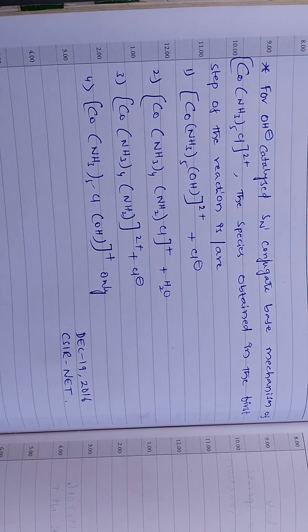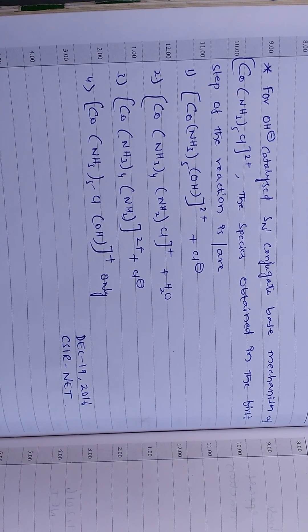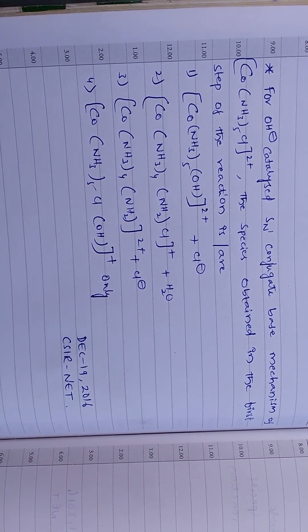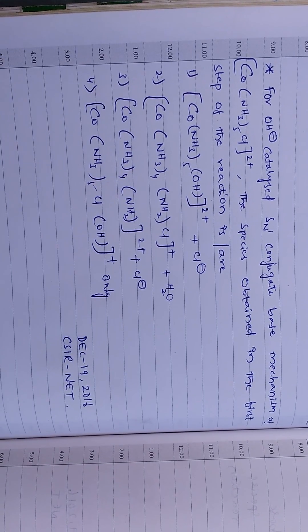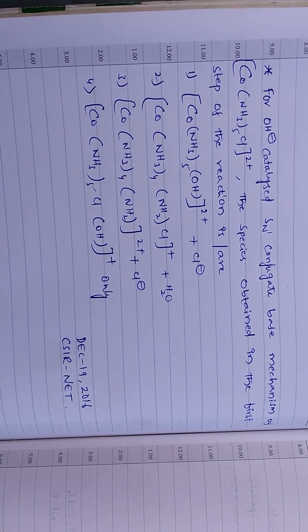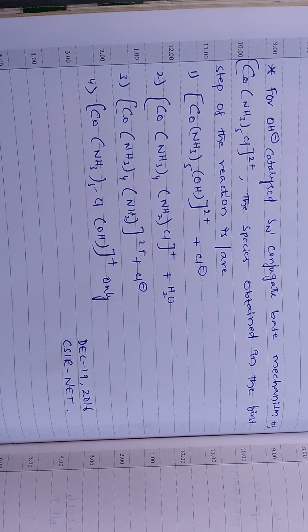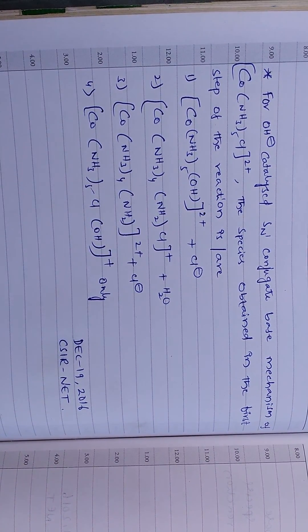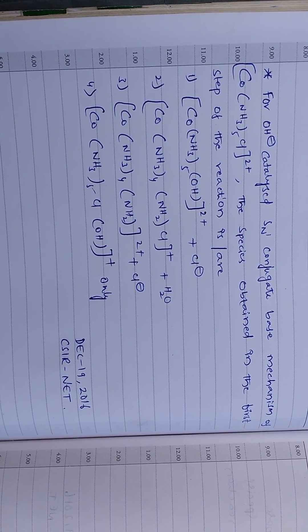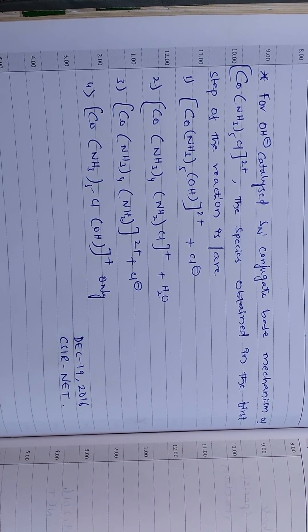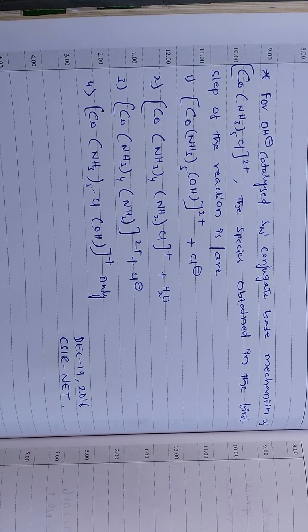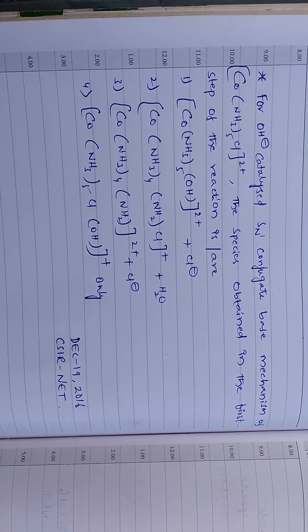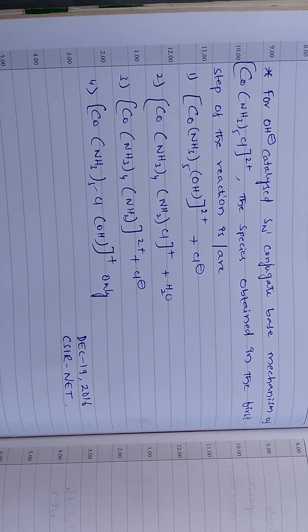So in this question, we should observe that this is SN1 conjugate base mechanism. In SN1CB mechanism, the substrate should contain protons to donate. That means the substrate should contain hydrogens to donate to the base. So that is the main point of the SN1CB mechanism.